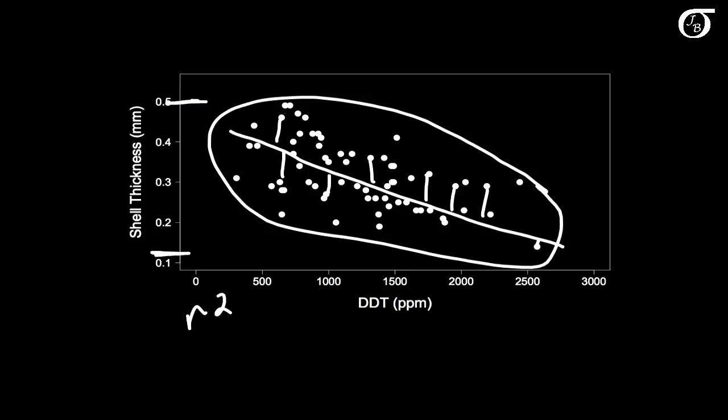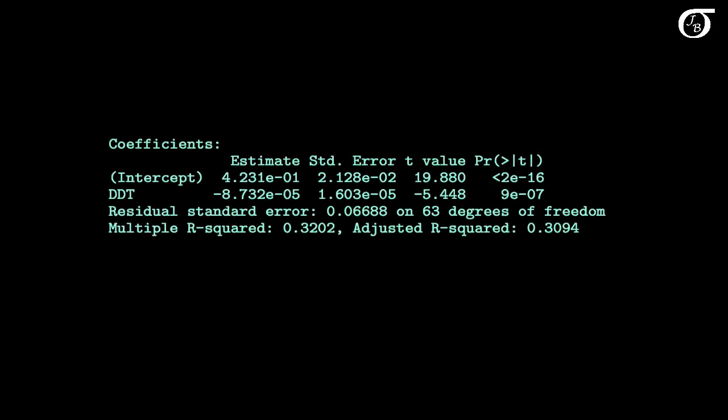R squared is sometimes called the coefficient of determination. And it is the proportion of the variability in the response variable y that is attributable to the linear relationship with x. And we can find r squared in our computer output.